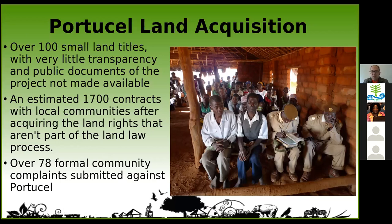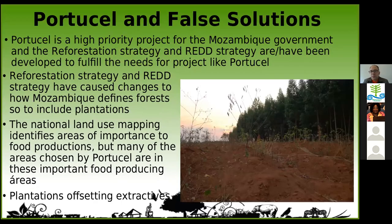In total there have been more than 78 formal community complaints put to PortCell, and the number is growing. Another very problematic issue is around false solutions, carbon credits, and reforestation strategies. Mozambique depends heavily on aid — over 40% of the national budget comes from donors like the World Bank and the EU. PortCell has a very good relationship with the EU and has significant influence over the development of Mozambique's REDD+ strategy and how the green economy will function within Mozambique.